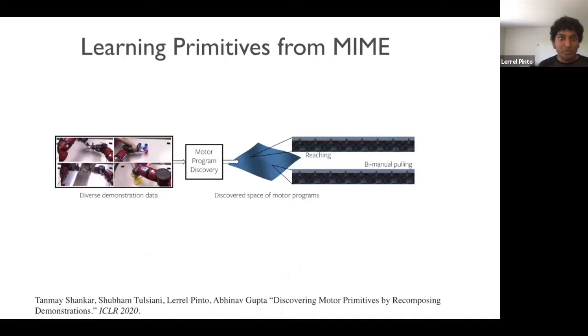The next thing we can do with MIME is to learn motor primitives. So because we have a diverse demonstration set, what we can do is we can extract motor primitives from this dataset. And what these motor primitives give you is that you can then in the future recombine them to solve a much harder task than what you initially saw. So for instance, if you can learn a primitive like how to reach or how to grasp or how to push, later on you can maybe combine them to solve a harder task, like let's say stacking objects on top of each other.